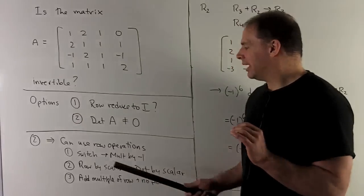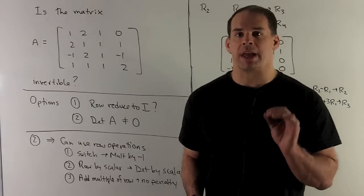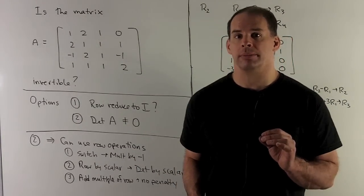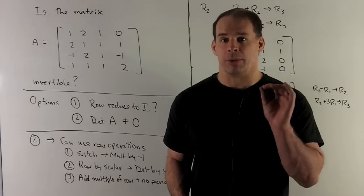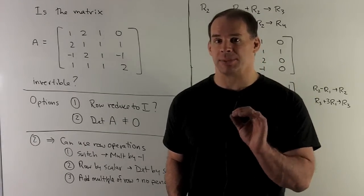First one, if we switch any two rows, we're going to multiply our determinant by minus 1. If I take any row, multiply it by a scalar, that's going to multiply your determinant by that same scalar.